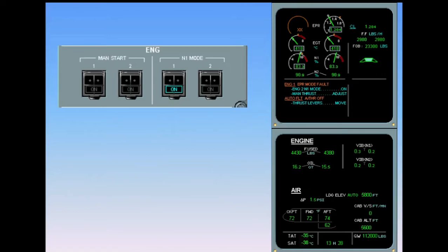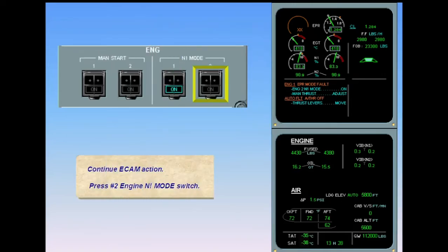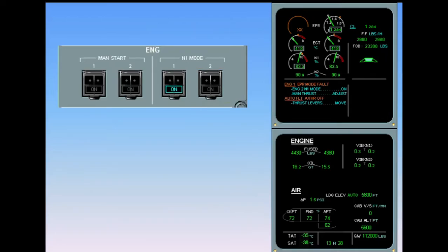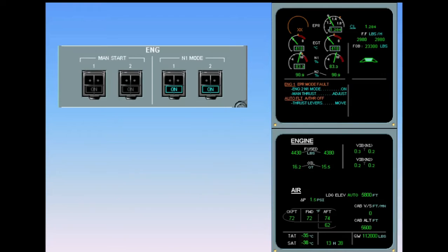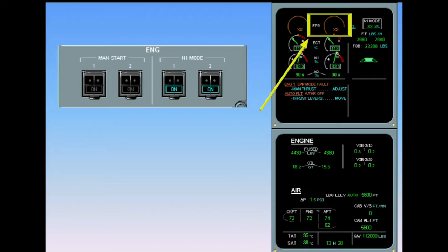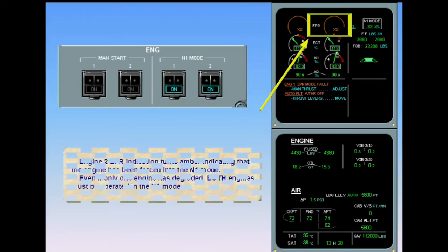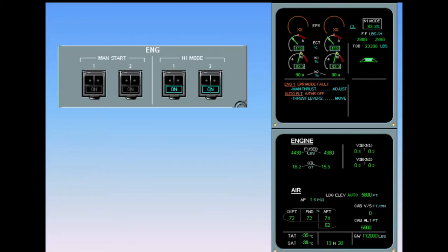Continue ECAM action. Press the number two engine N1 mode switch. Engine number two EEPER indication turns amber, indicating that the engine has been forced into the N1 mode. Even if only one engine has degraded, both engines must be operated in the N1 mode. The N1 indications are now the same for both engines.